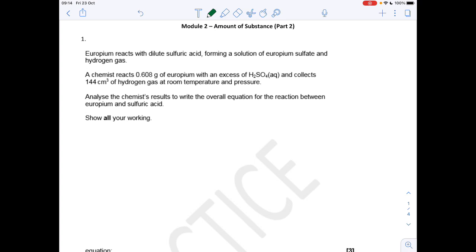The first question is quite a tricky one actually. Europium reacts with dilute sulfuric acid, forming a solution of europium sulfate and hydrogen gas. We're given some quantities of europium and the volume of hydrogen gas produced at room temperature and pressure, and we've got to come up with the overall equation for this reaction.